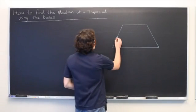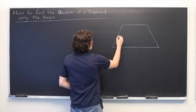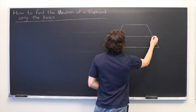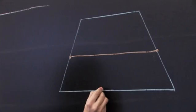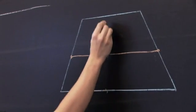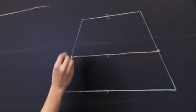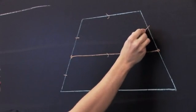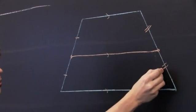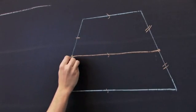So for those who don't know, the median of a trapezoid is a line that is parallel to the two bases that cuts the other sides equally in half. We'll call this m.